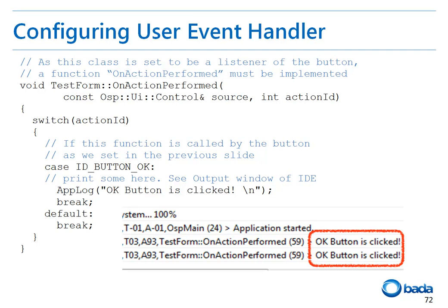Let's see how the action event handler is implemented in the source code. In the TestForm.cpp file, you can see the implementation of the onActionPerformed function. This function receives the source control and the action ID through the function parameters. The function identifies the type of event that has occurred using the action ID and handles the event as you can see in the source code. The function outputs the log when the action ID is ID_Button_OK — in other words, when the OK button is pressed.